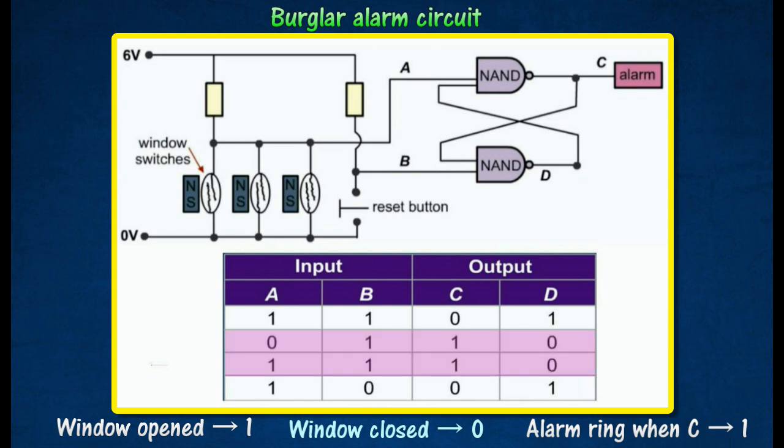The alarm will ring when one of the switches is on. This happens when the output C is at logic 1 even though input A is at logic 0 when a window is opened and closed again.